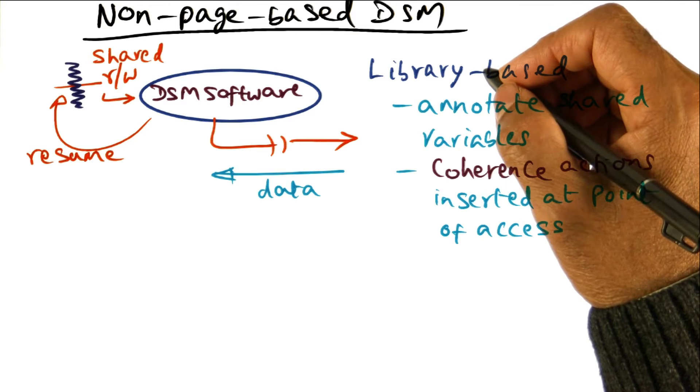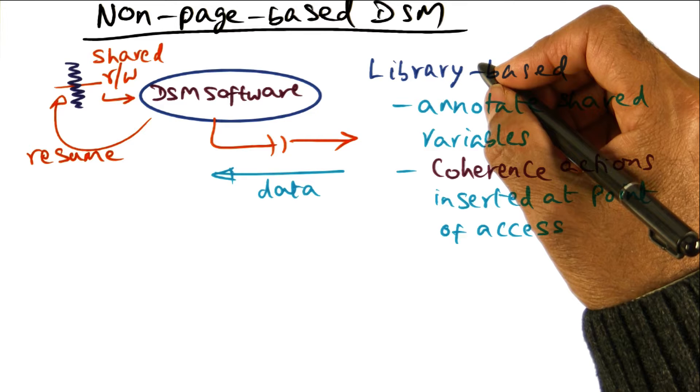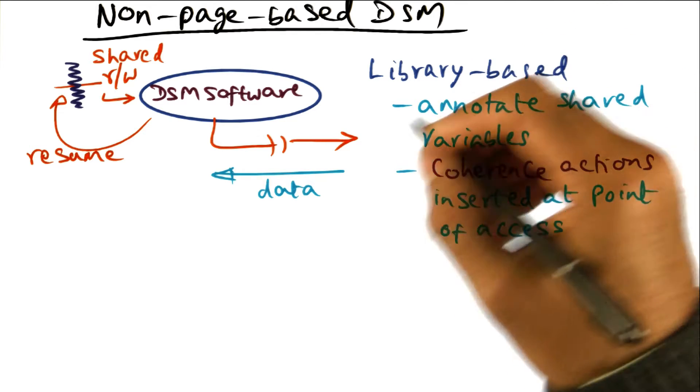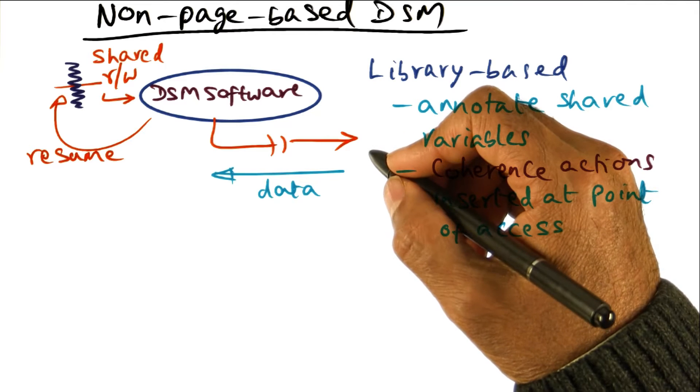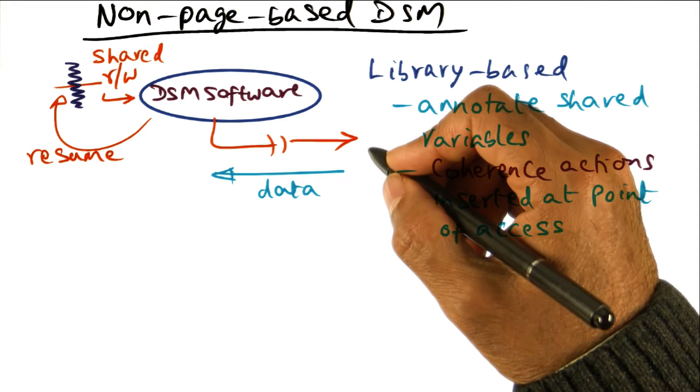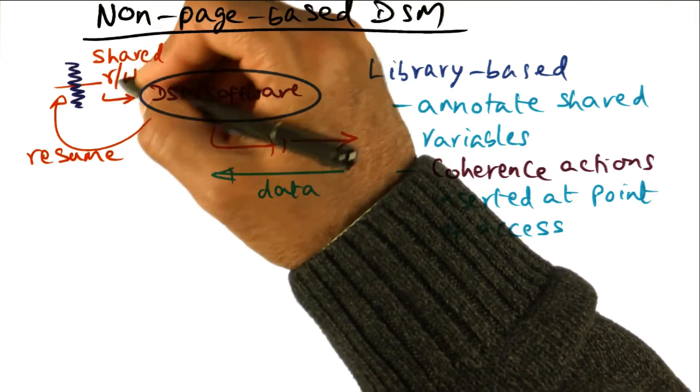There have been systems that have been built that do not use granularity of a page for coherence maintenance. I mentioned earlier that if you want to maintain granularity not at the page level, then you have to track individual reads and writes that are happening on a thread.